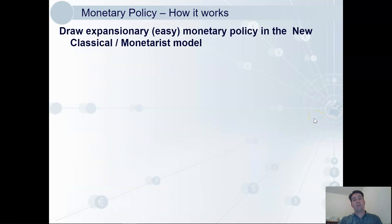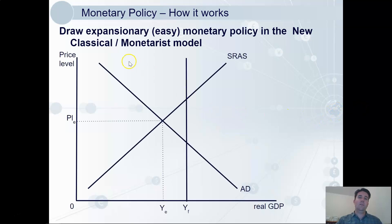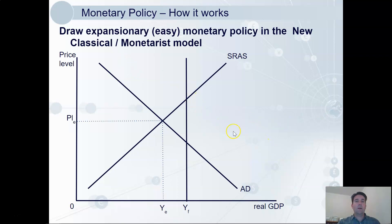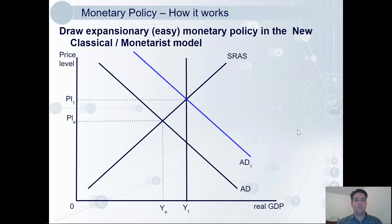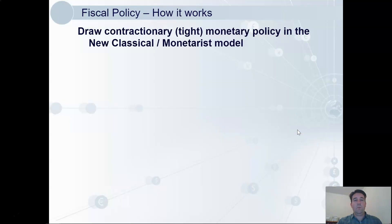Now, how does monetary policy work? We're going to show how it works using a diagram — it's an increase in aggregate demand. They're generally going to use it when we're well below the full employment level of output. Expansionary monetary policy is going to expand the economy — that's going to increase consumption and increase investment when interest rates are lowered. Sometimes called easy monetary policy as well.